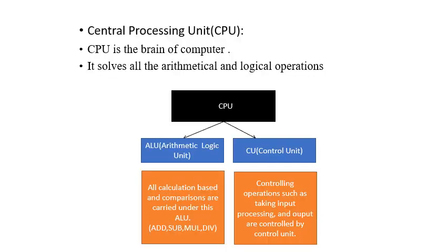The central processing unit is divided into two parts: one is the Arithmetic Logic Unit and the other is the Control Unit. The Arithmetic Logic Unit, as the name tells, solves all logical, arithmetical, and mathematical operations such as multiplication, subtraction, addition, etc. The Control Unit takes control over all operations being performed — such as input, output, and processing. All these operations are controlled by the Control Unit.